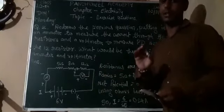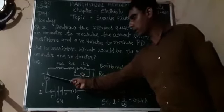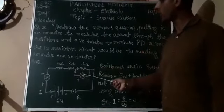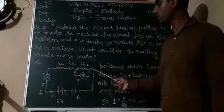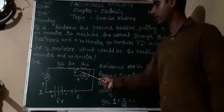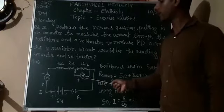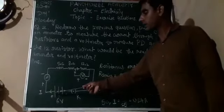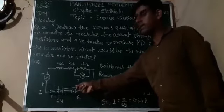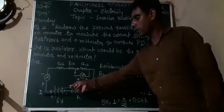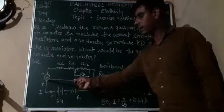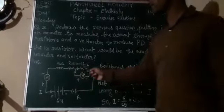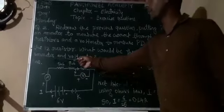The ammeter can be placed at various points in the circuit, but it is always connected in series. The voltmeter is connected across the 12 ohm resistor — across means at the end points of this resistance — and it is connected in parallel to the 12 ohm resistor. Now we want to measure the current flow. This current is measured by the ammeter, so we calculate the value of current I.